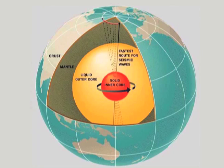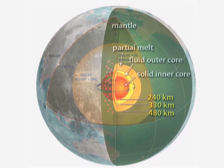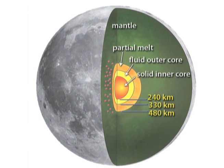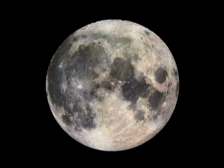We know on earth that we have a crust, mantle, and a core. The same thing is actually true of the moon, where we have a crust, mantle, and a core. But up until recently, we only knew roughly what the size of the core was, whether or not it was molten, and what the materials are that it's made of.